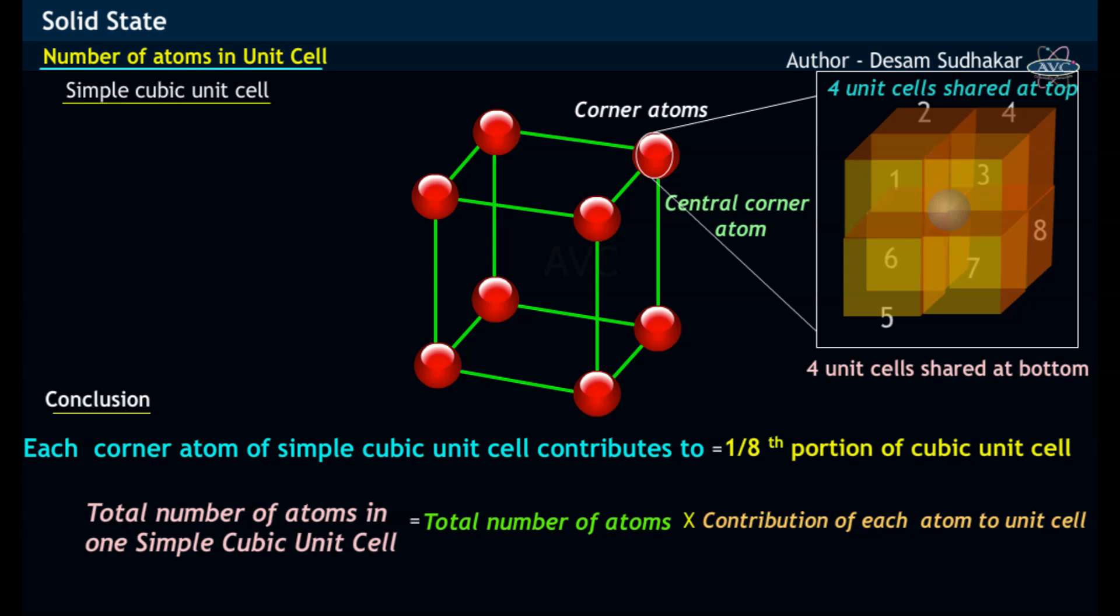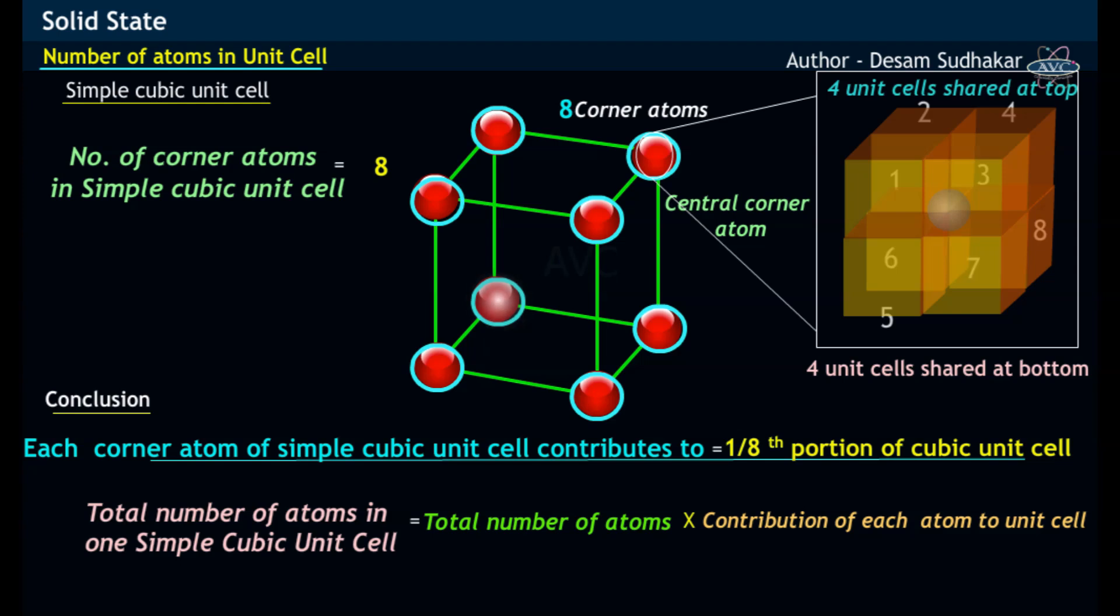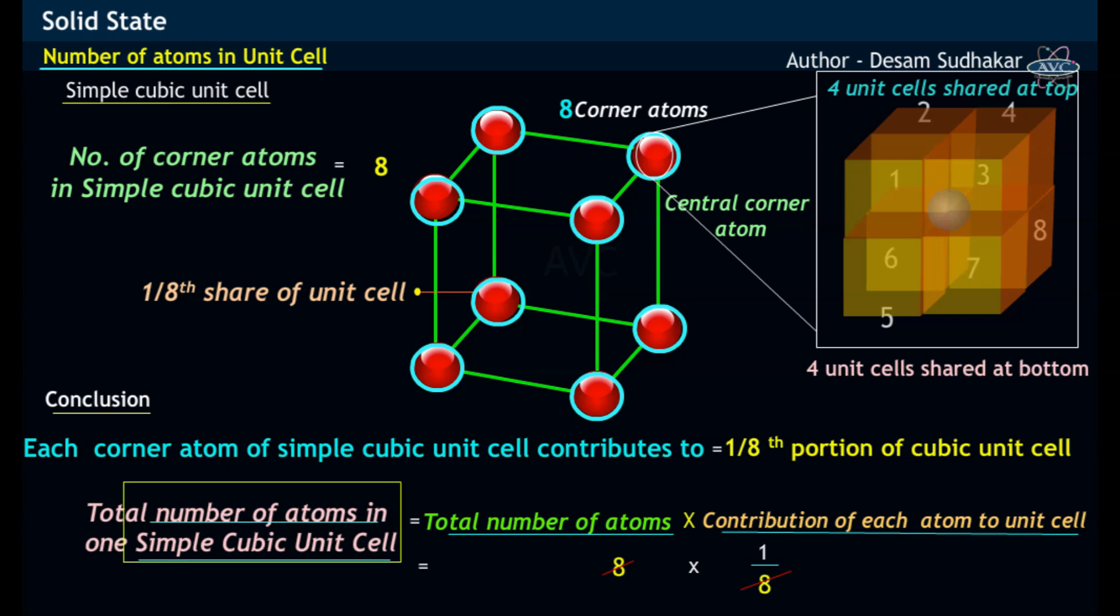Since simple cubic unit cell has eight corner atoms, with each atom contributing to one-eighth portion of unit cell, the total number of atoms equals eight multiplied by one by eight. By cancelling common term eight, we get the number of atoms in simple cubic unit cell equivalent to one atom.